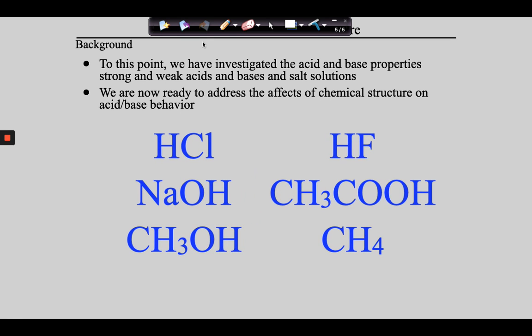What do all six of these compounds have in common? They all have hydrogen. But the one in the upper left is a strong acid, the one in the upper right is a weak acid, the one in the middle left is a base, the one middle right is a weak acid, the one bottom left is an alcohol, and the one bottom right is a molecular gas. So why do they all behave so radically differently if they all contain hydrogen? The first thing I'm going to do is lay before you the three things you have to keep your eye on.